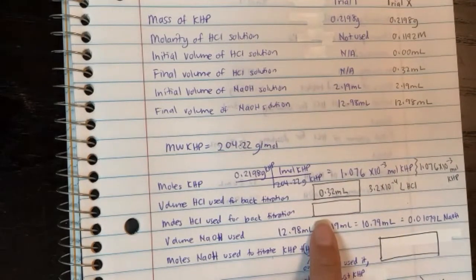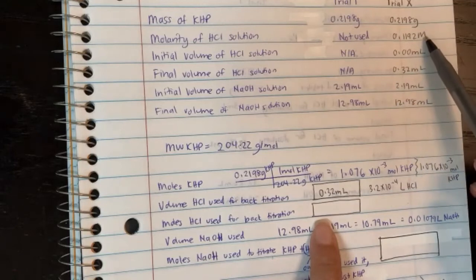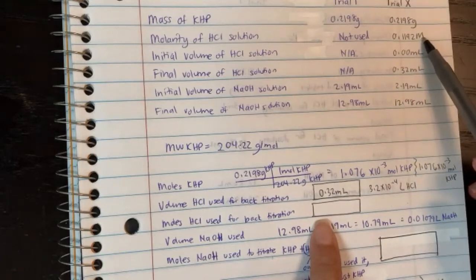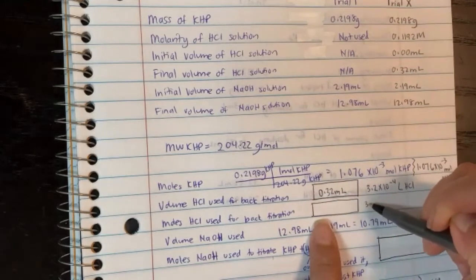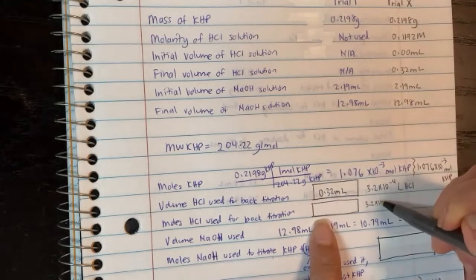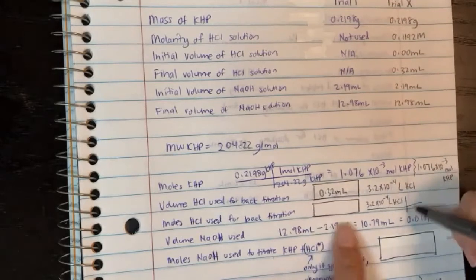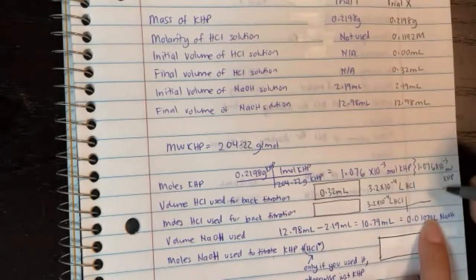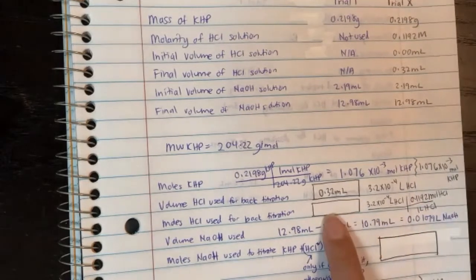So if I have 3.2 times 10 to the minus 4 liters of HCl, I can use that to get my moles of HCl by working it with the molarity of the HCl. So if I know the volume is 3.2 times 10 to the minus 4 liters, let me do the math over here. 3.2 times 10 to the minus 4 liters of HCl. And I know the molarity of HCl is 0.1192 moles of HCl in every one liter of HCl. So I can get the moles of HCl here.